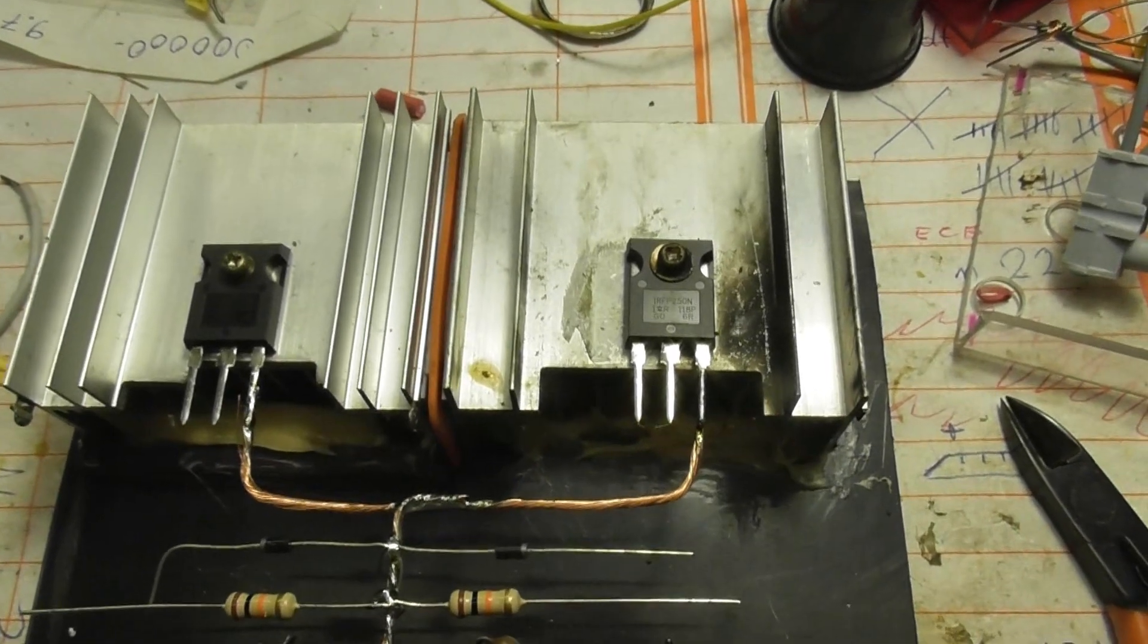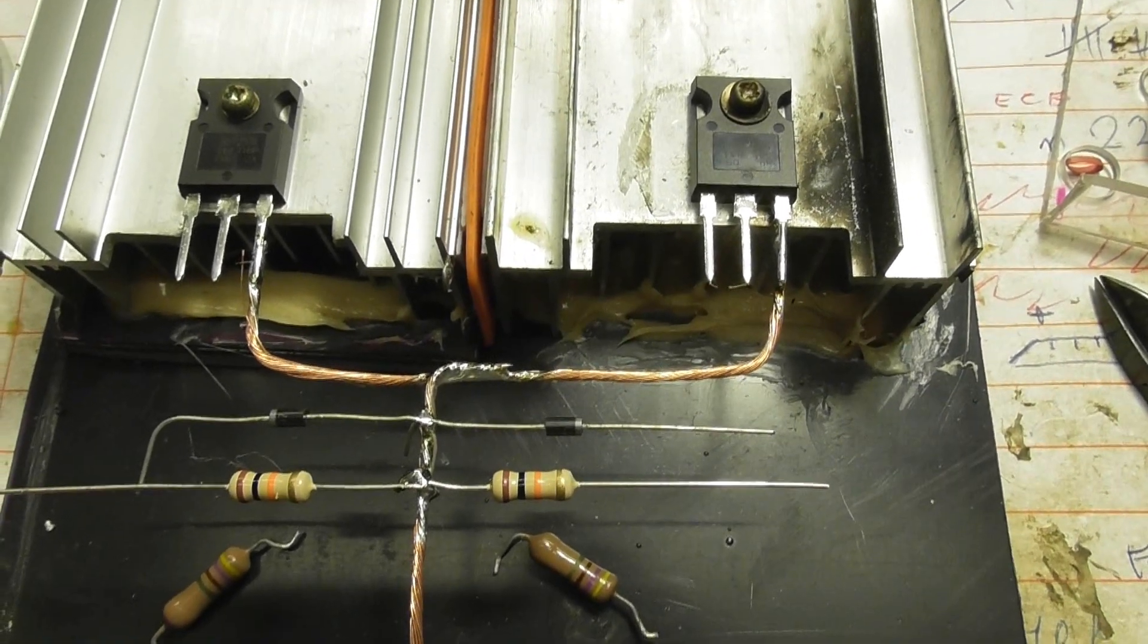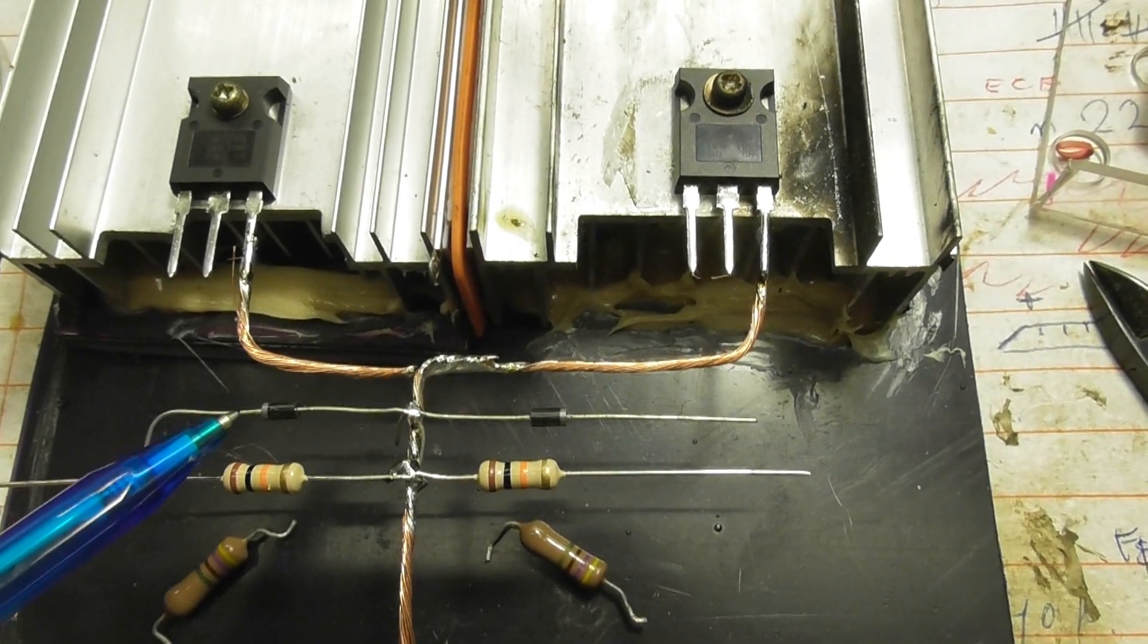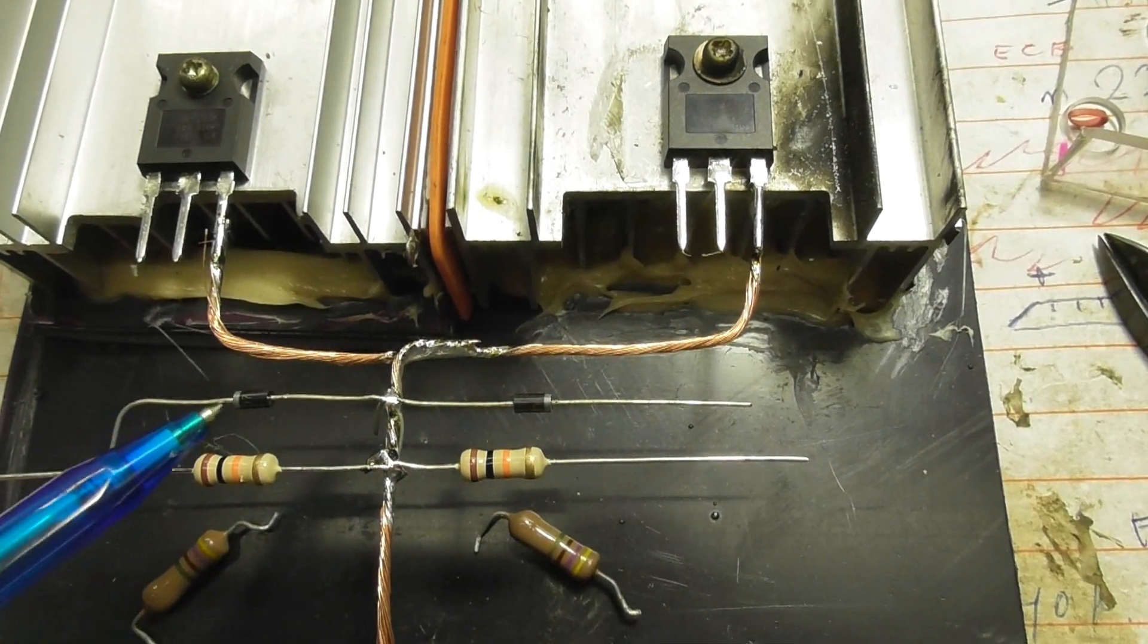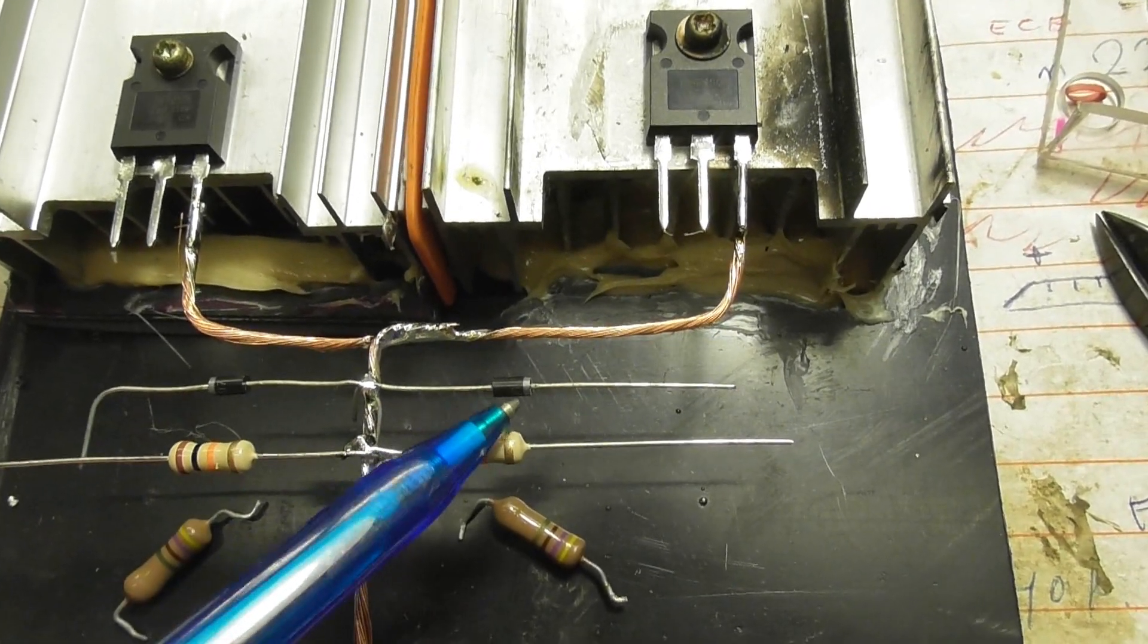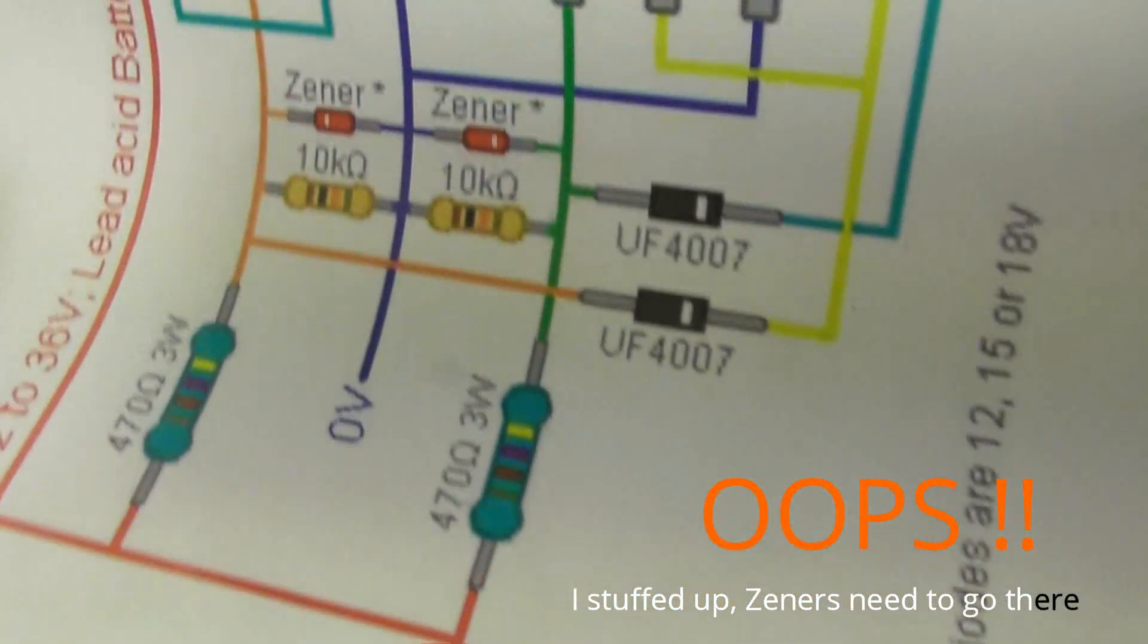So I've put the negative of the two MOSFETs together. So these are the fast rectifier diodes. Keep into account that the band is on the outside, same as with the diagram here, on the Zener.